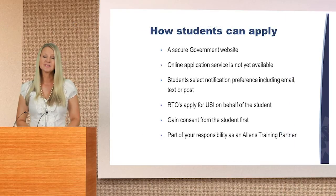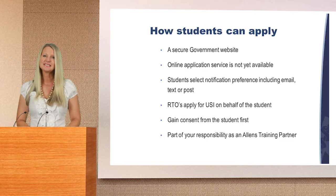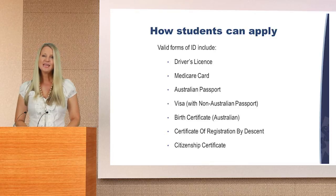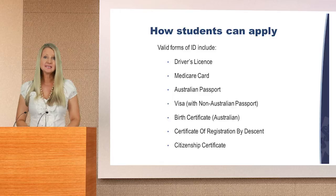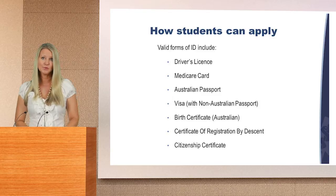RTOs are able to apply for a USI on behalf of the student; however, they are required to gain consent from the student first. This will be part of your responsibility as an Allens training partner. In this case, ID requirements are part of the application process. In order to complete the online application, individuals will need to enter their personal details into the application and provide verification of their identity via one of the following Australian valid forms of ID.